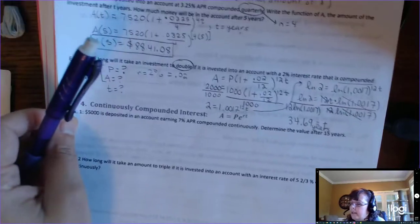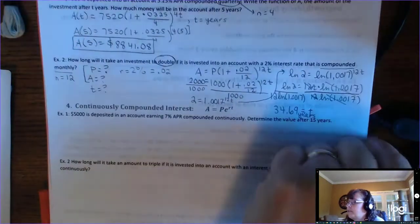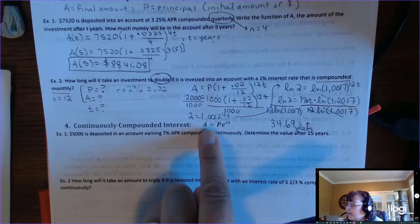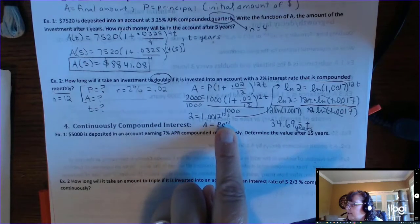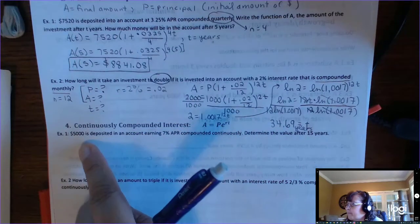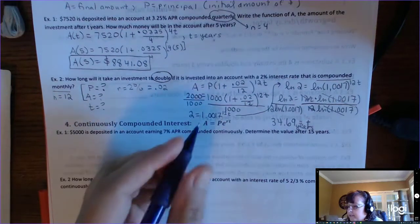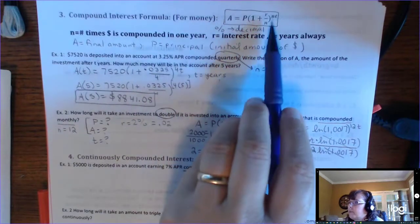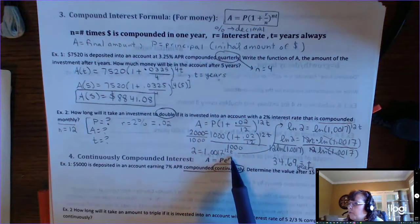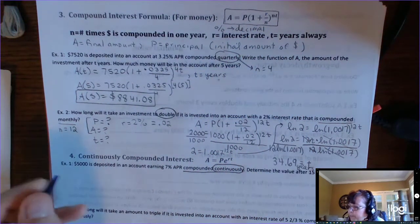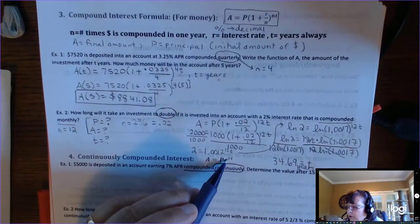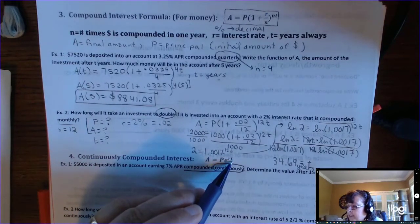All right. Let's look at continuously compounded interest. These two formulas kind of go together. They both have the word compounded. You use this formula, A equals P E to the R T. I call it the PERT formula. When the problem says it's compounded continuously. If the word is continuously, you cannot use this one. You have to use the PERT formula. So A is still final amount. P is still initial amount. R is still interest rate. T is still time in years.